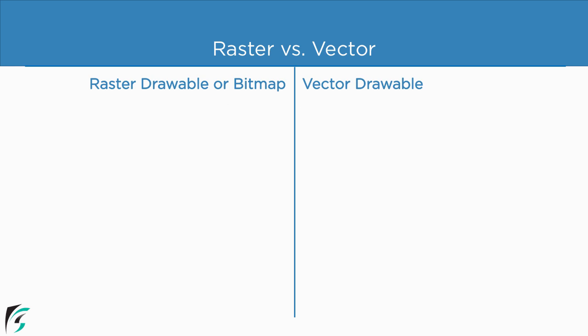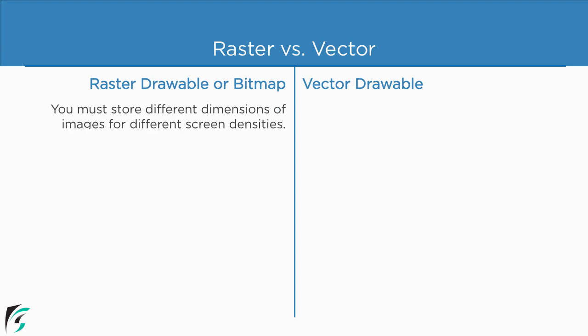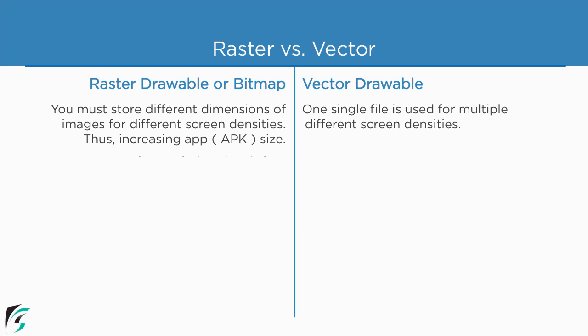In order to maintain the compatibility of raster drawables, you have to store different dimensions of images for different screen densities, as we saw in the previous videos. This results in an increase in application size, that is the size of the APK file. But in the case of vector drawables, we can use one single file and render it across different screen density devices, resulting in a smaller APK size. This is one of the major advantages of using vector drawables within an application.